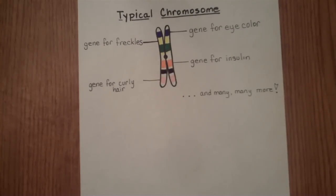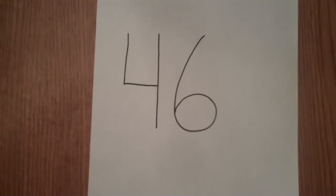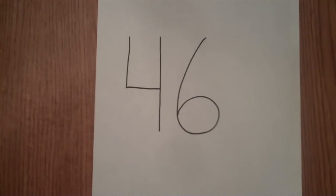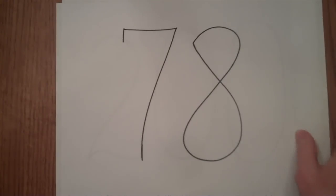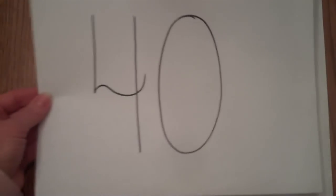Chromosomes are not related to the complexity or intelligence of the organism. Humans have 46 chromosomes. Crayfish have 200. Dogs have 78. And beavers have 40.